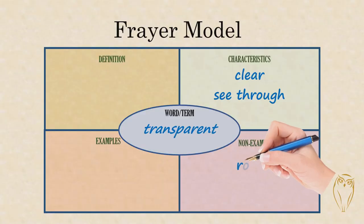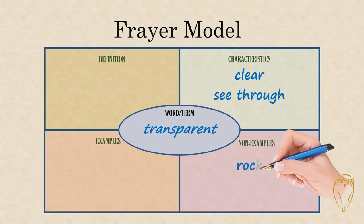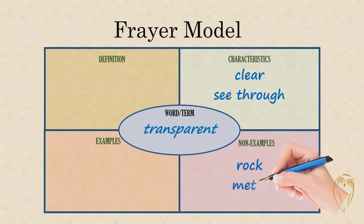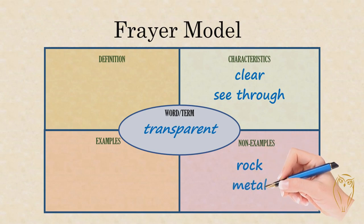The next block underneath is asking me for non-examples. So I'm thinking about things that are not clear or that I can't see through, and that makes me think about things that are solid, like a rock or a piece of metal. So I'm going to use those as my non-examples and write 'rock' and 'metal' in that block.